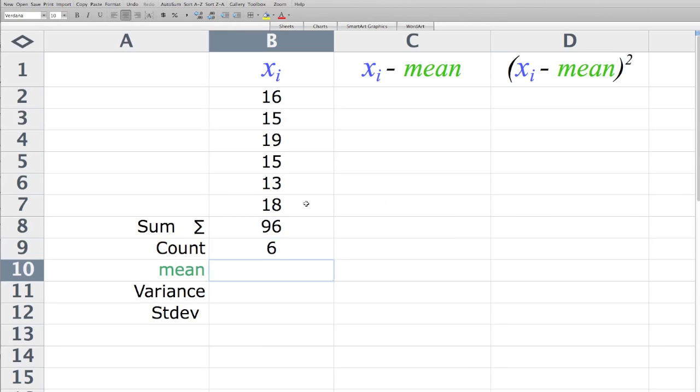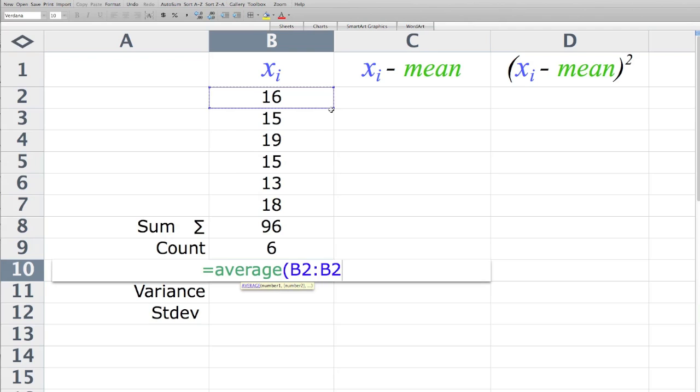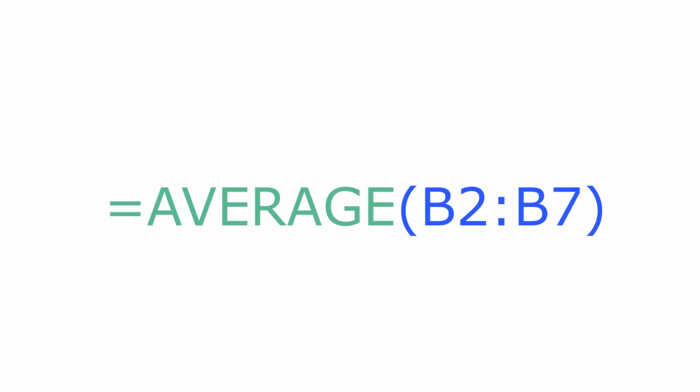Now I'm going to calculate the average. So I hit equal and type the word average, open parentheses, click on the first value and drag down, and close parentheses. You can also just type the command.